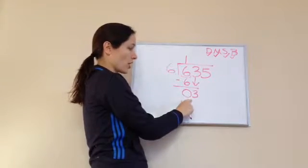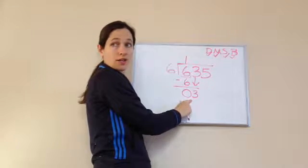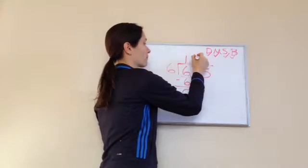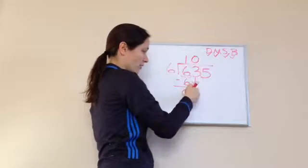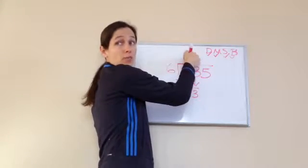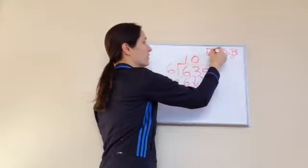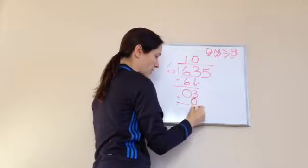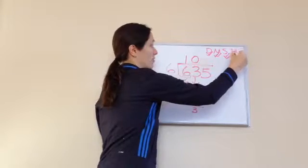Now will 6 go into 3? No. No. But what can I use? 0. Because I'm working with this, I have to put the 0 in that spot. So I divide it. Now let's multiply. 0 times 6 is 0. I'm going to subtract. And bring down.